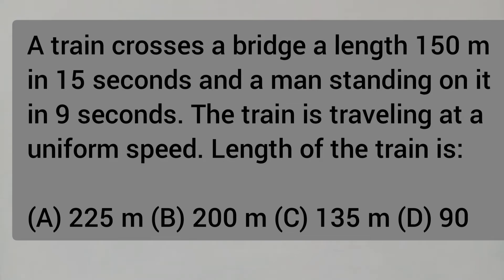A train crosses a bridge of length 150 meters in 15 seconds, and passes a man standing on it in 9 seconds. The train is travelling at a uniform speed. Find the length of the train.